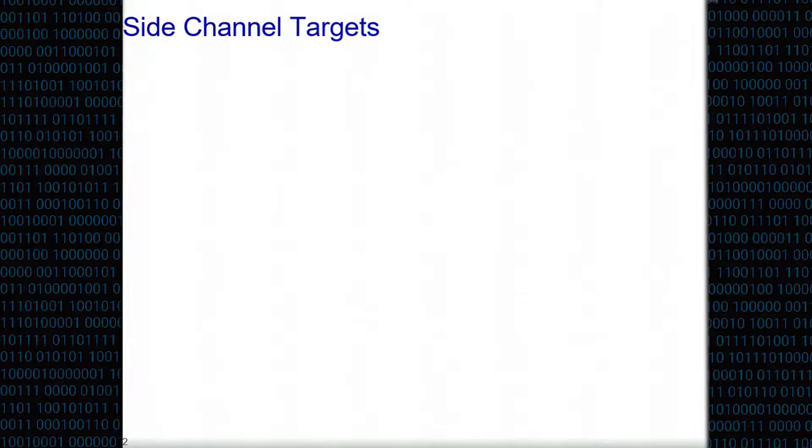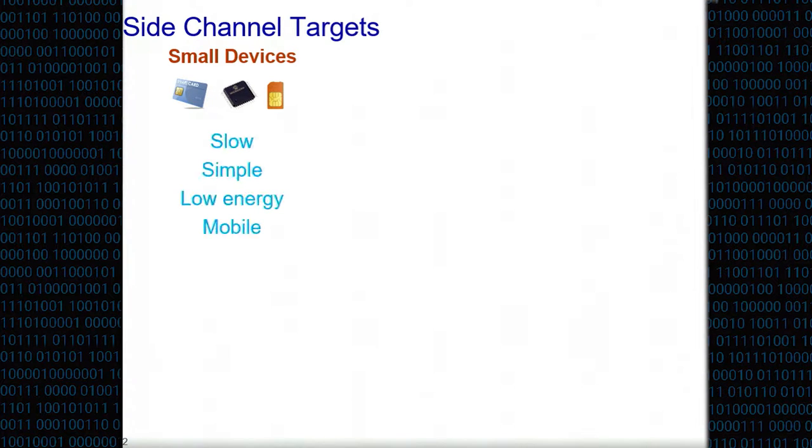Side channel analysis, especially physical side channel analysis, is the dark art of extracting crypto keys by measuring unintentional physical leakage from computing hardware. We usually run these attacks on what I refer to as small devices: SIM cards, smart cards, FPGA, small microcontrollers. These devices are quite slow and simple - it's basically one chip that does crypto, runs very slowly compared to PCs around 100 megahertz.